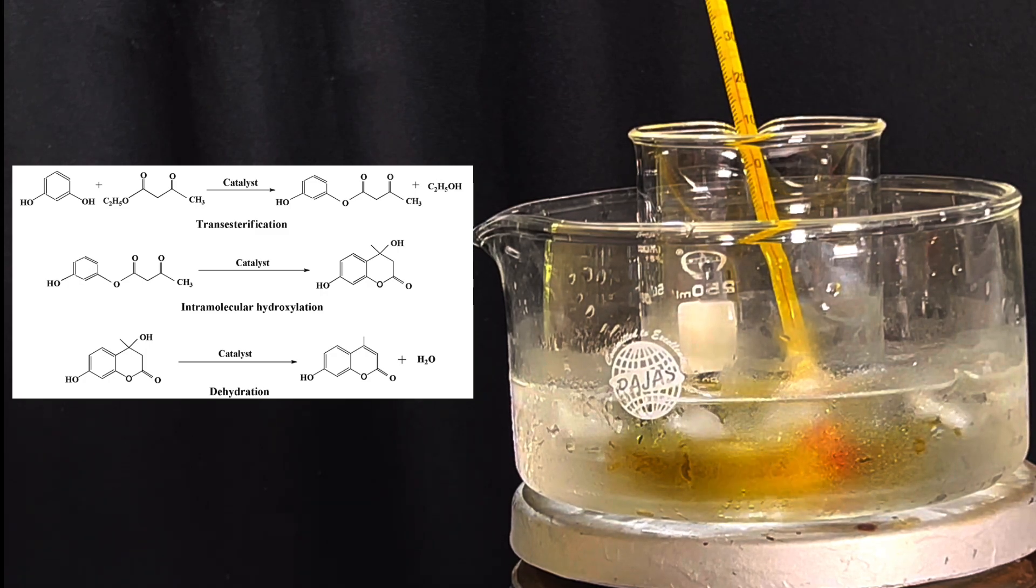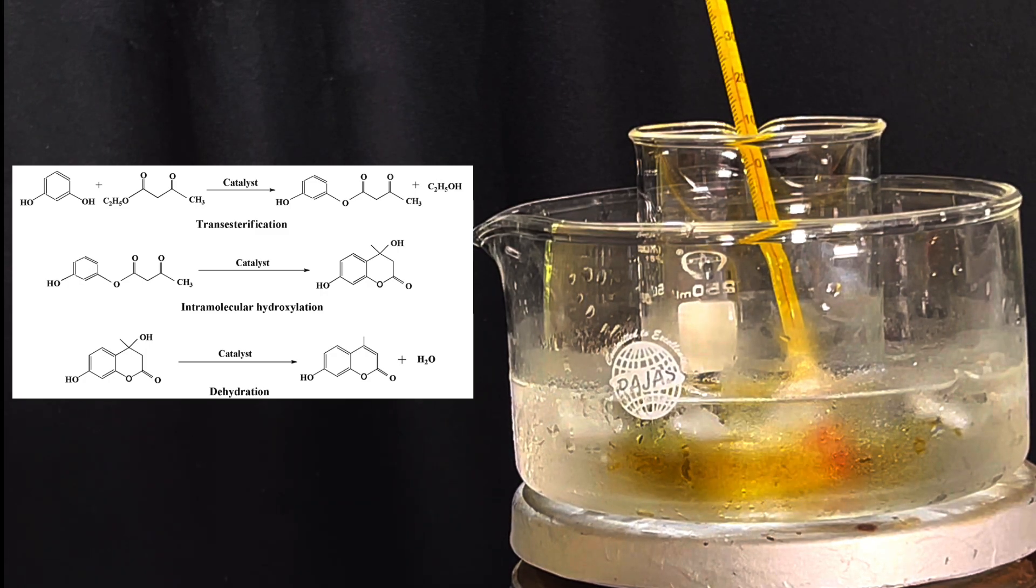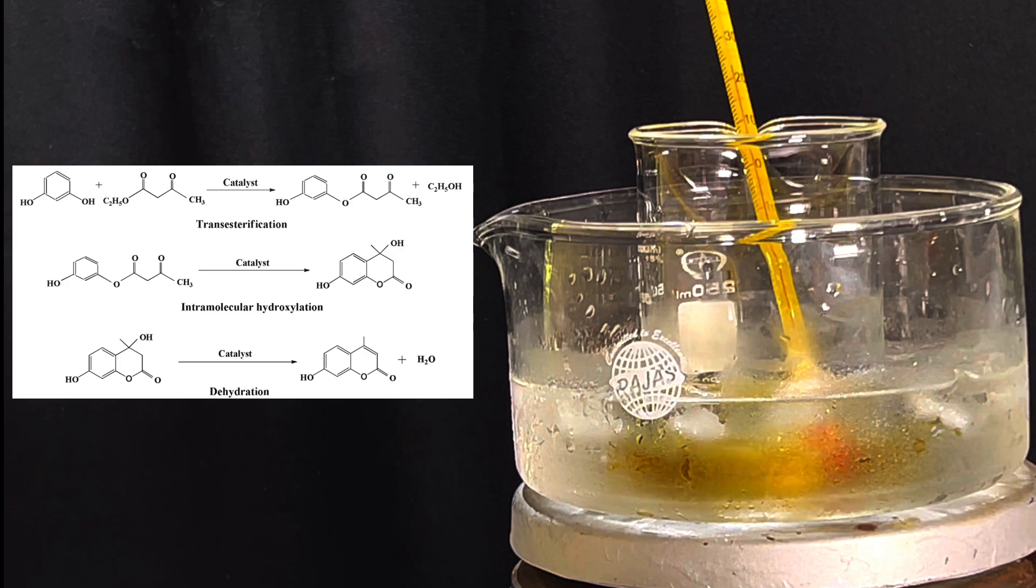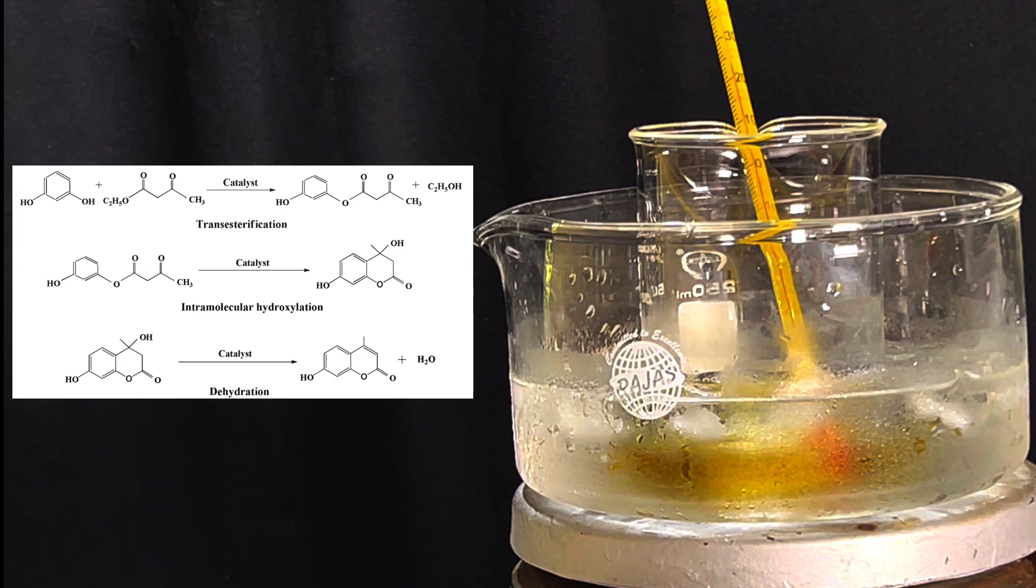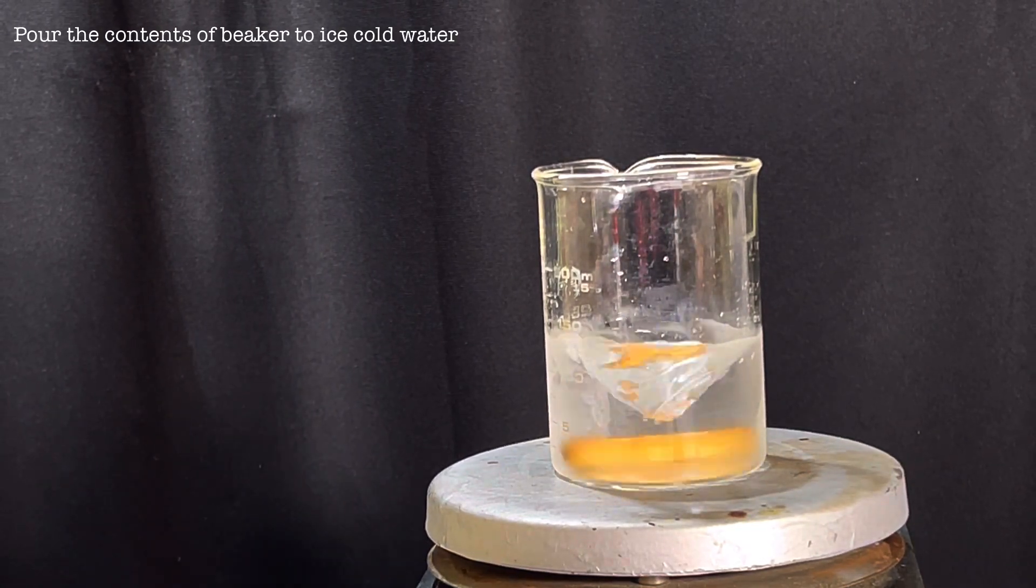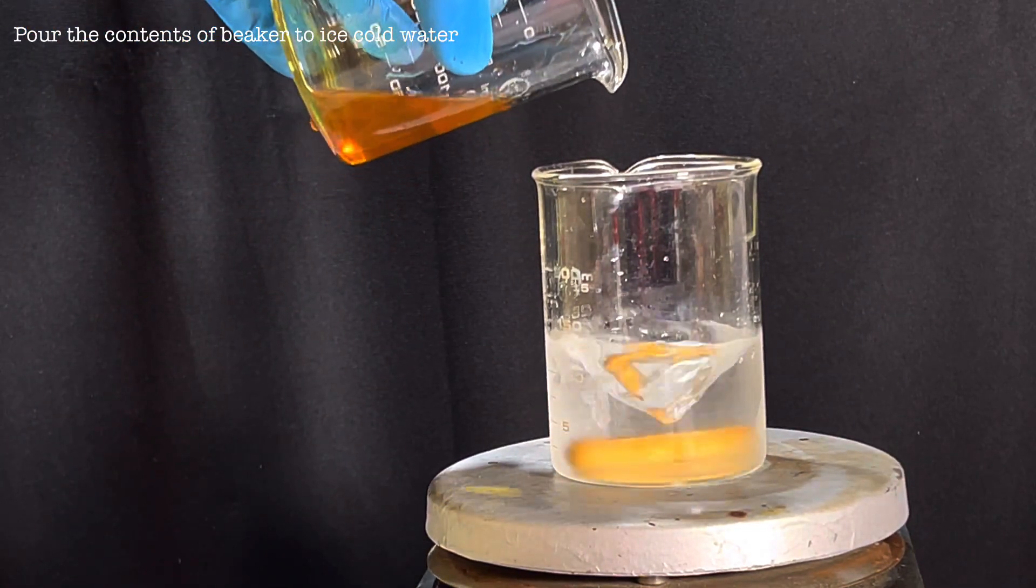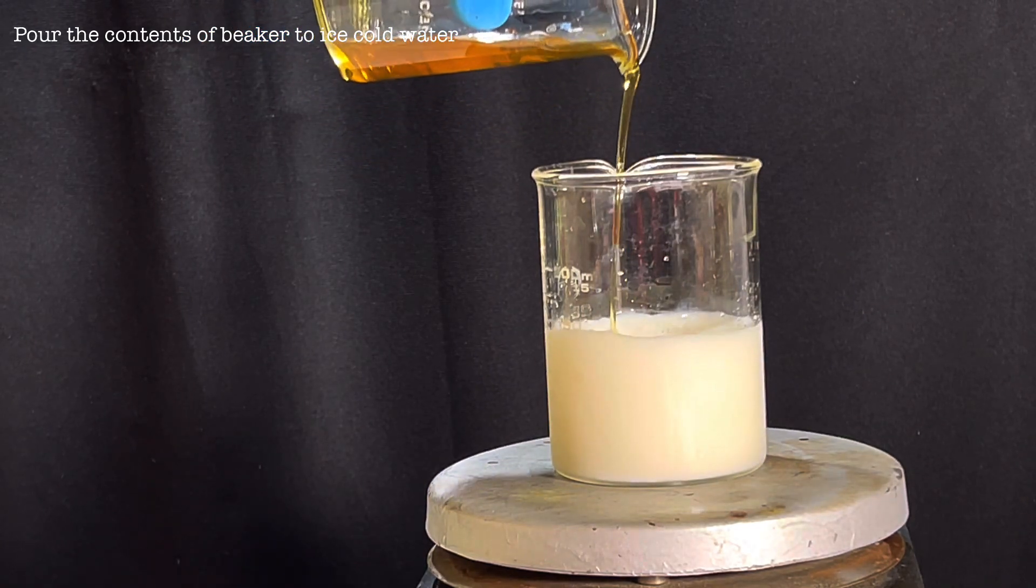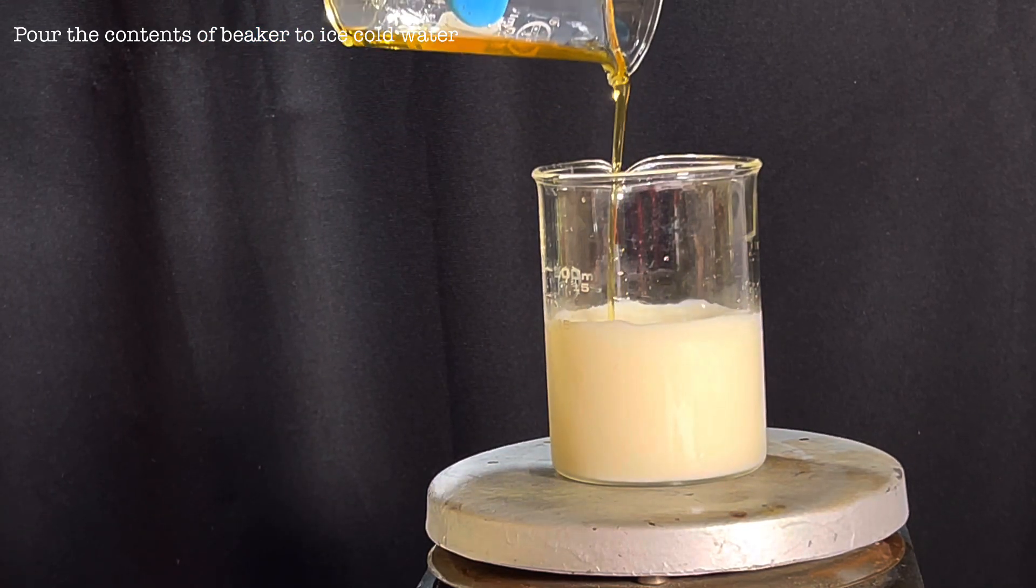Once all the resorcinol ethyl acetoacetate mixture is added to the sulfuric acid, the mixture was kept stirring for 10 minutes to carry the reaction forward to completion. Then, with the stirring turned on, the contents of the beaker was poured into ice water taken in a beaker. Immediately you see the formation of a pale yellow precipitate and this is the crude product.